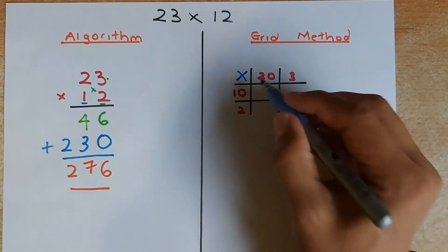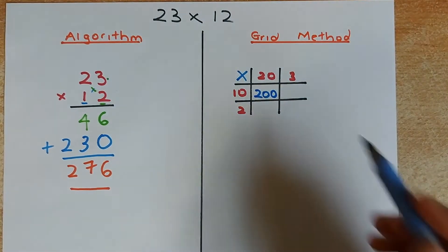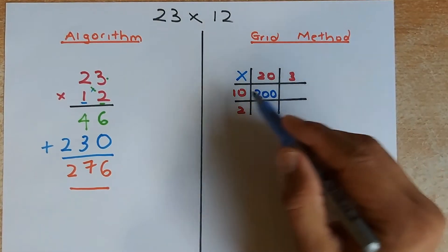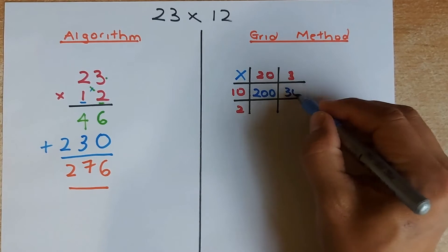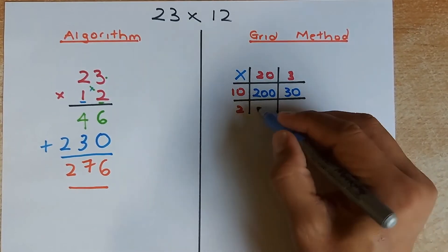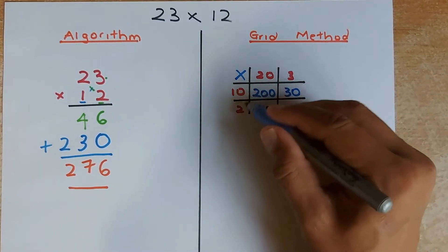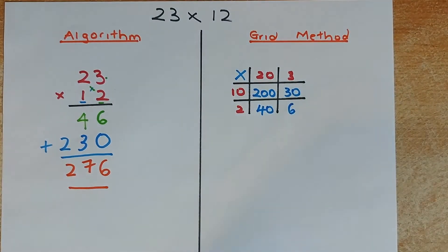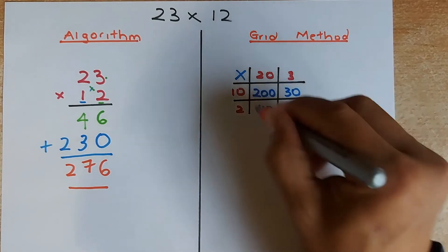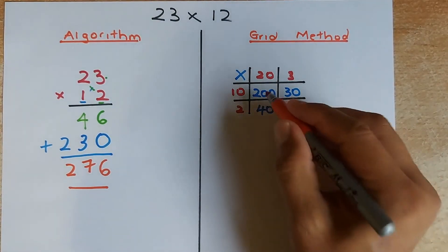So 20 times 10, if you do not know, it is going to be 200. 3 times 10 is going to be 30. 20 times 2 is going to be 40. And then 3 times 2 is going to be 6. So what you are going to do, you are going to add everything in the box here. If you do not know, you can add slowly.